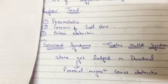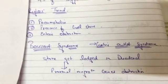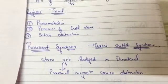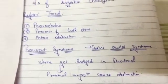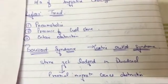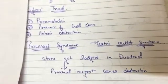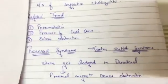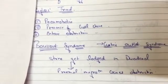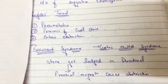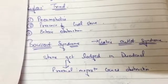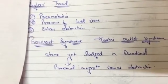The next thing is Bouveret's syndrome. You don't need to memorize it — you just need to know about it. It is a gastric outlet syndrome. As you can make out from the name, the stone gets lodged in the duodenum and travels toward the stomach — toward the gastric outlet — and gets lodged there. This proximal migration causes obstruction at the gastric outlet.